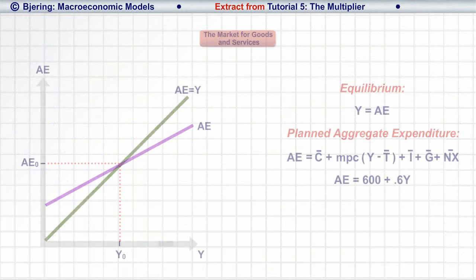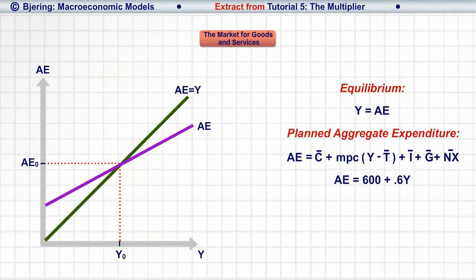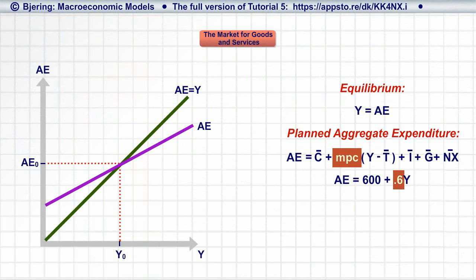Assume now that the sum of the exogenous demand variables is 600. Assume also that the marginal propensity to consume, MPC, is 0.6. So endogenous demand is 0.6 times Y.